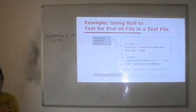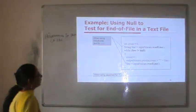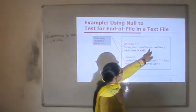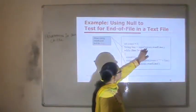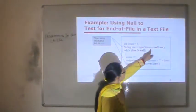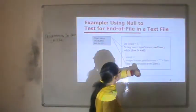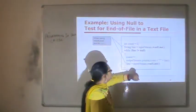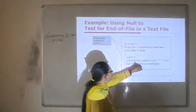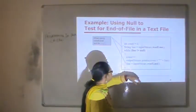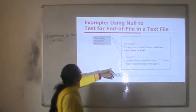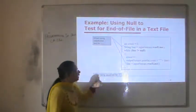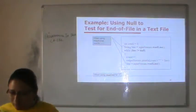This is an example using null to test for end of file in a text file. We use the readLine method and check whether the line is not equal to null — if it is not null, we increment the count and continue reading. When the value is null, we exit the loop.